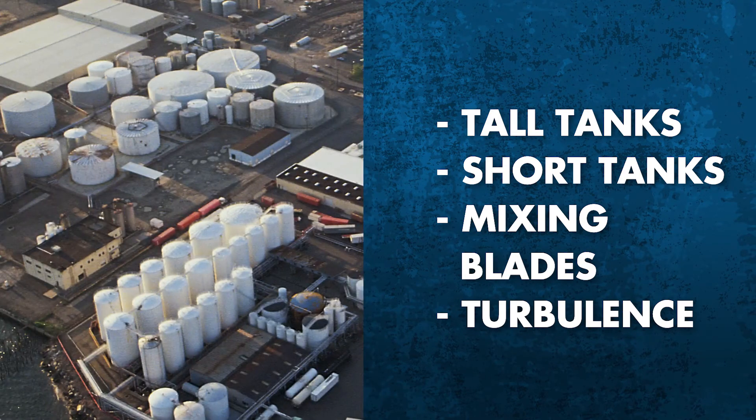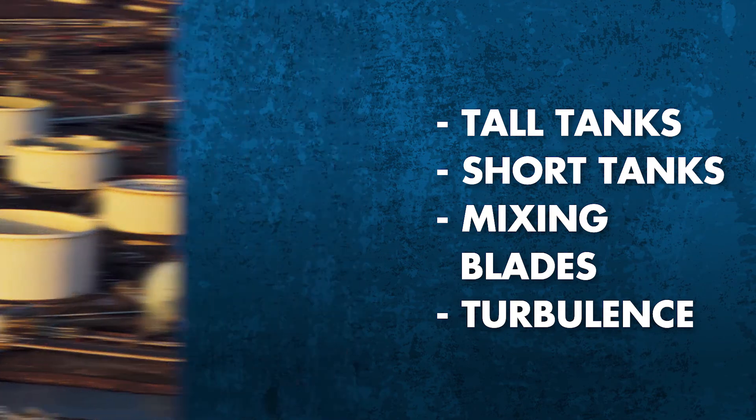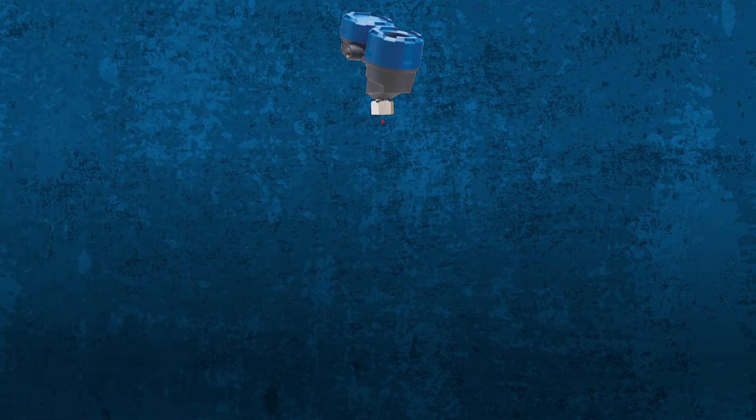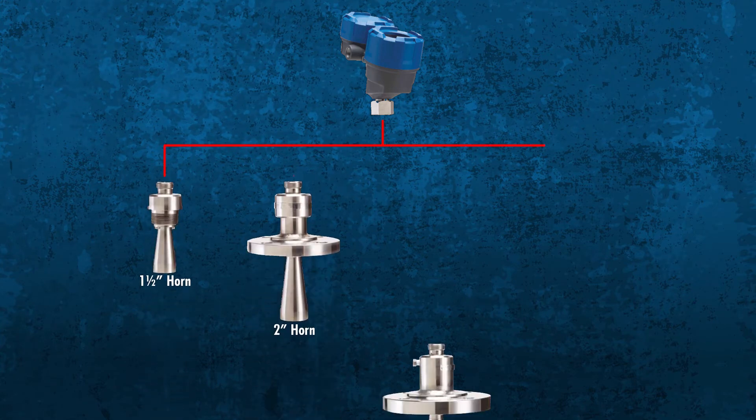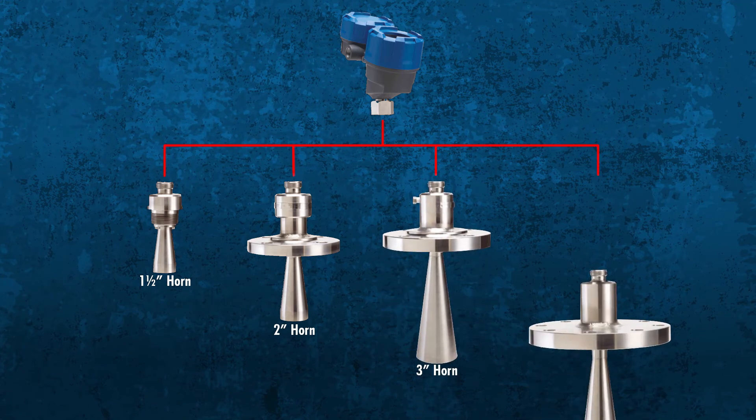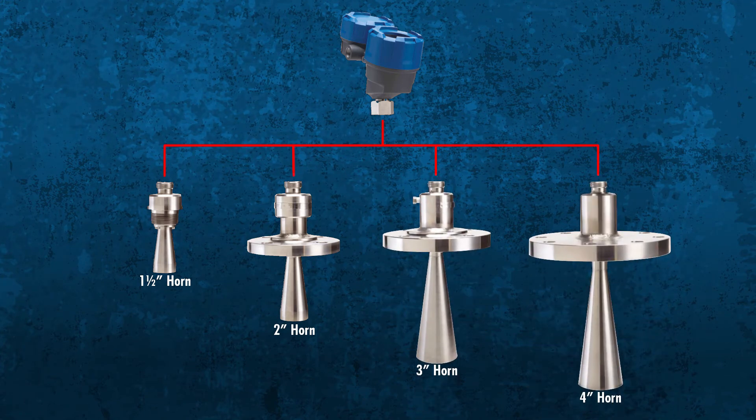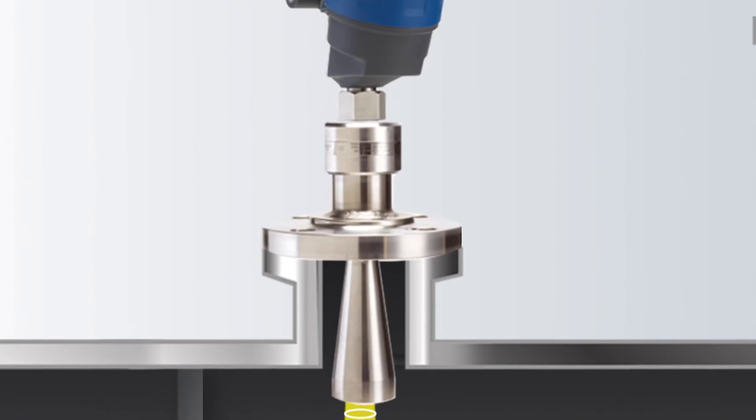When it comes to versatility, the Model R86 is ready for challenging applications. That means tall tanks up to 40 meters, short tanks, mixing blades, and turbulence. And the range of high-temperature, high-pressure antennas are made for punishing conditions, from cryogenic to 400 degrees Celsius or 750 degrees Fahrenheit, and full vacuum to 160 bar or 2,320 psi.